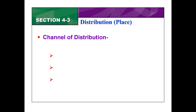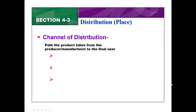When we look at distribution, we typically create what's called a channel of distribution. A channel of distribution is the path that the product takes from the producer or the manufacturer to the final user. Distribution is another word for place, so place includes everything within that path — how it gets distributed to different places or stores and where it ends up being sold.